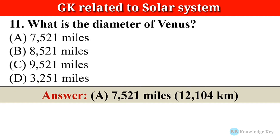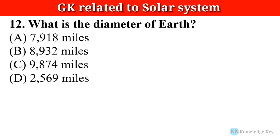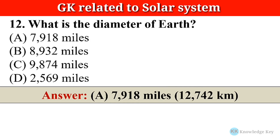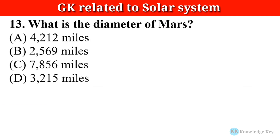12,104 kilometers. Question number twelve: What is the diameter of Earth? The correct answer is option A — 7,918 miles, which is equal to 12,742 kilometers.